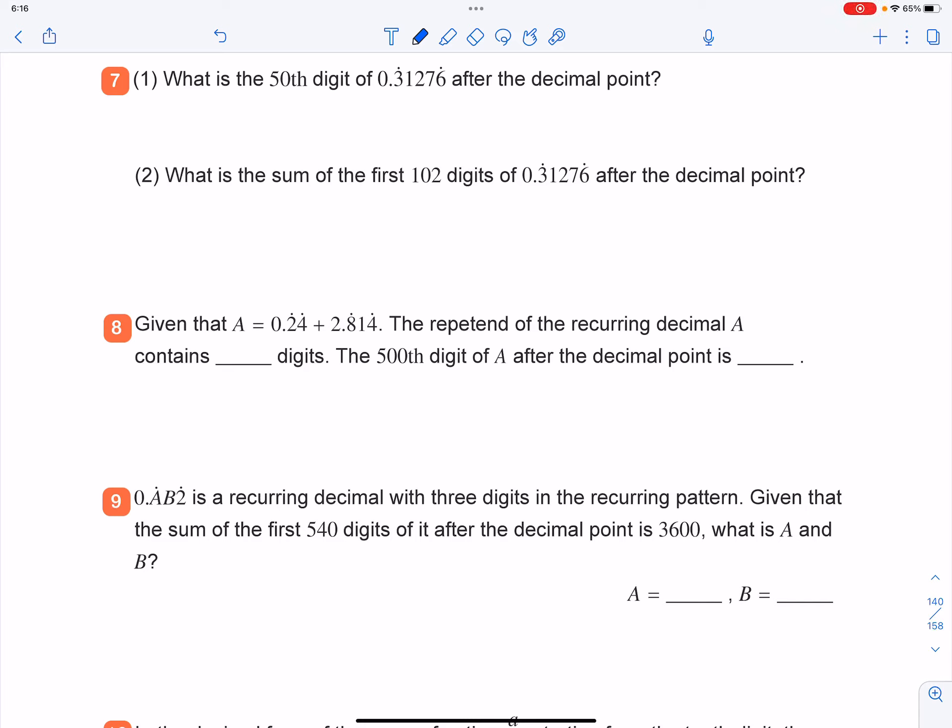Basic access is question number seven. What is the 50th digit of 0.31276 with these five digits recurring after the decimal point?